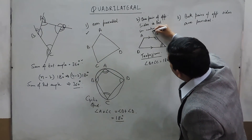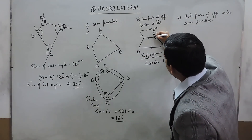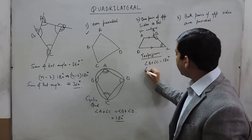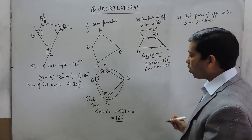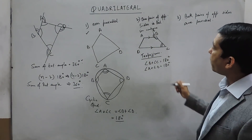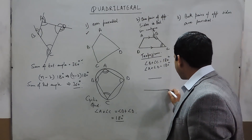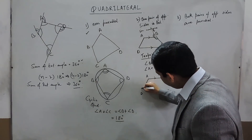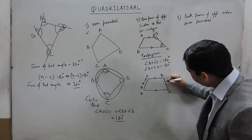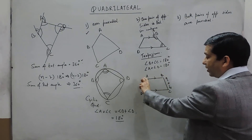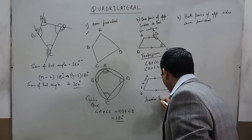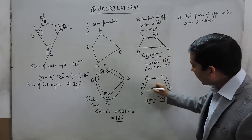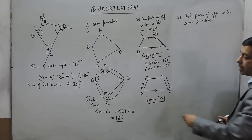If we extend a line above C going towards E, then this angle equals angle B, so the sum forms a straight line equal to 180 degrees. Similarly, angle A plus angle D is also 180 degrees, since the sum of all four angles must be 360 degrees. There is another kind of trapezium where one side is parallel to the other side, and the lengths of AD and BC are both equal. This trapezium is known as an isosceles trapezium, where the non-parallel sides are equal in length.